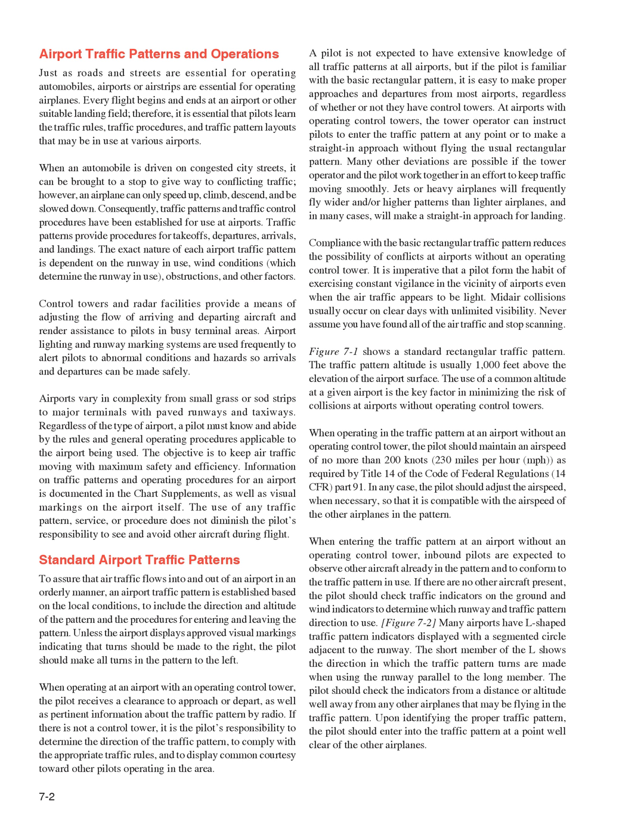When operating in the traffic pattern at an airport without an operating control tower, the pilot should maintain an airspeed of no more than 200 knots (230 miles per hour), as required by Title 14 of the Code of Federal Regulations, 14 CFR Part 91. In any case, the pilot should adjust the airspeed, when necessary, so that it is compatible with the airspeed of the other airplanes in the pattern.